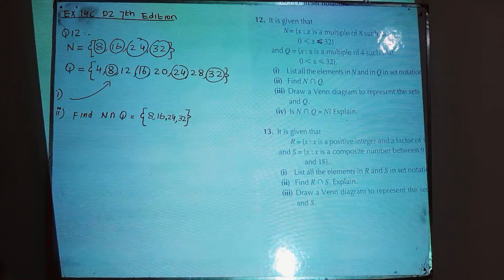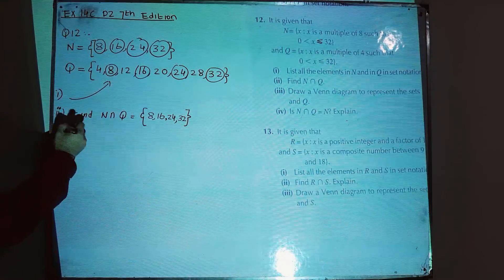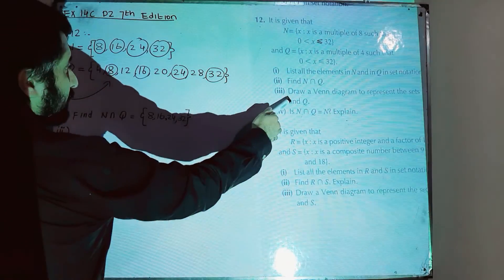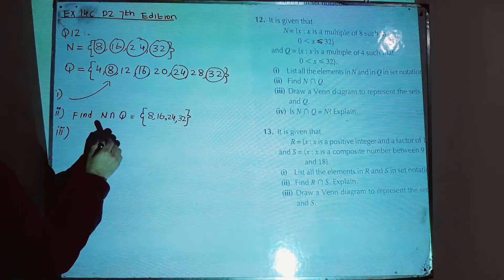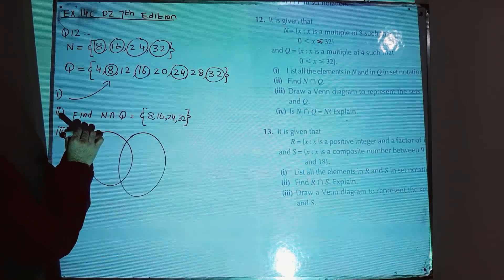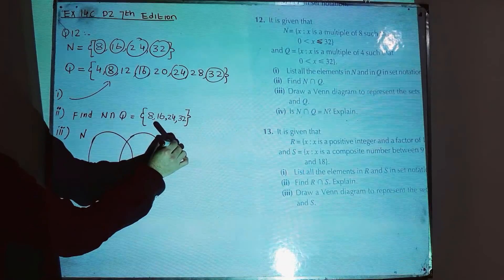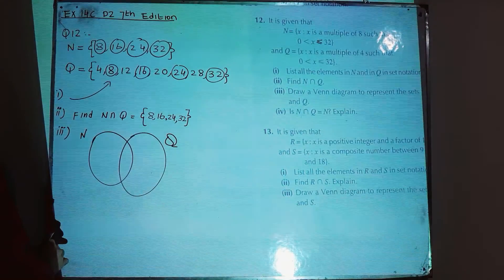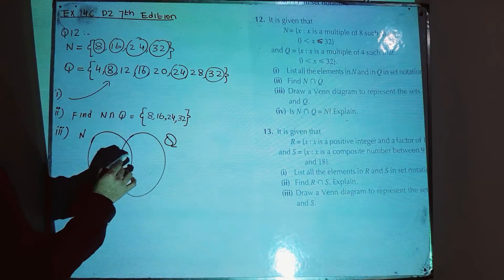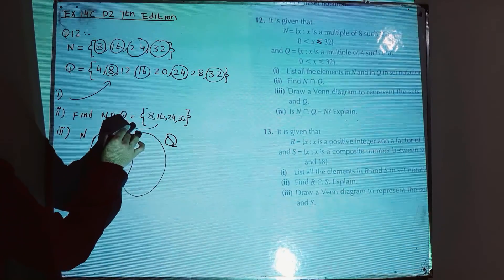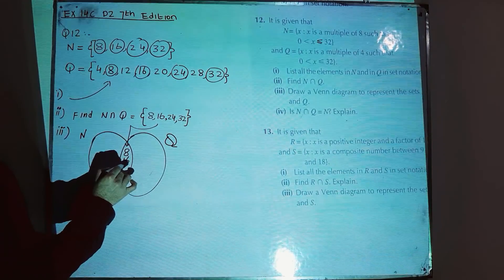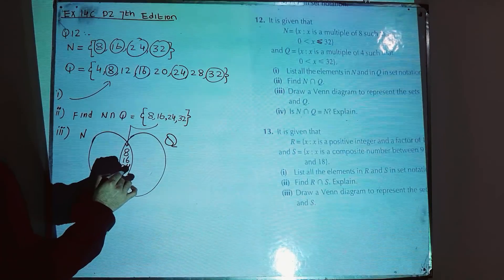Part 3: draw a Venn diagram to represent sets N and Q. Draw 2 circles — one for N, one for Q. Write the common elements 8, 16, 24, 32 in the overlapping region. N has no other elements outside the common region.